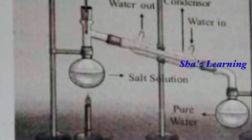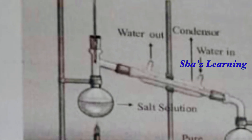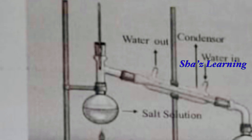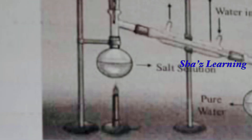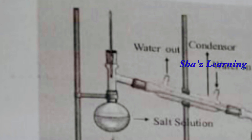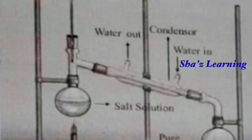We have a salt solution and we heat it. In the process of heating, the water will evaporate — it is only the water that evaporates because the boiling points are different. With the condenser, cold water flows through the condenser.